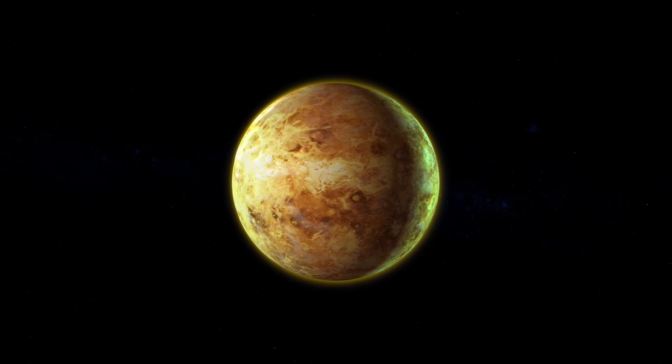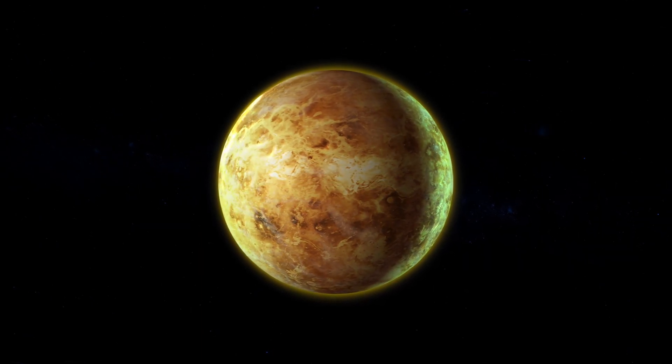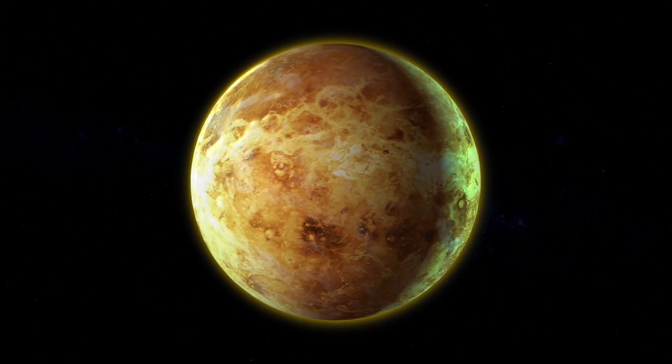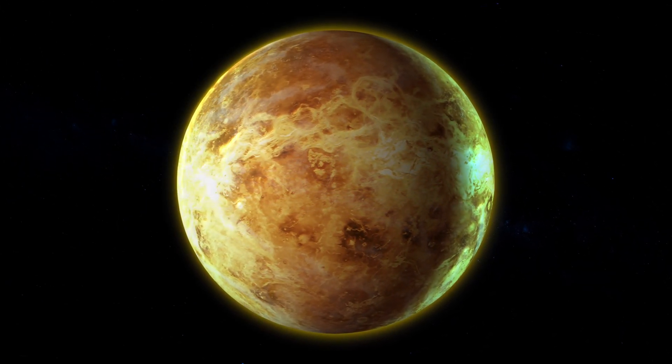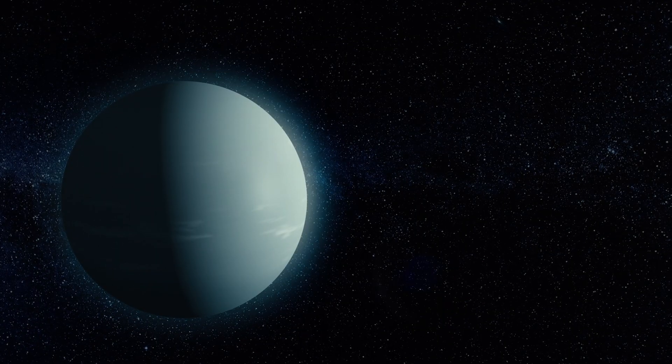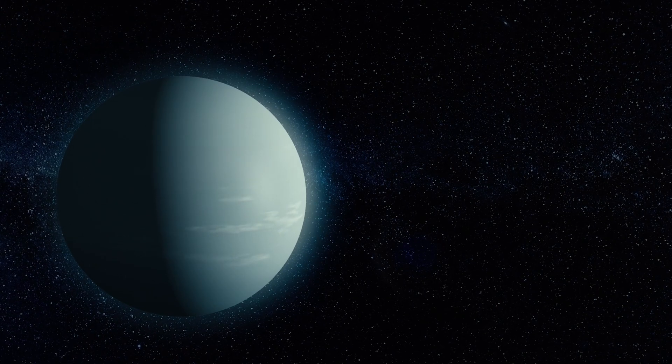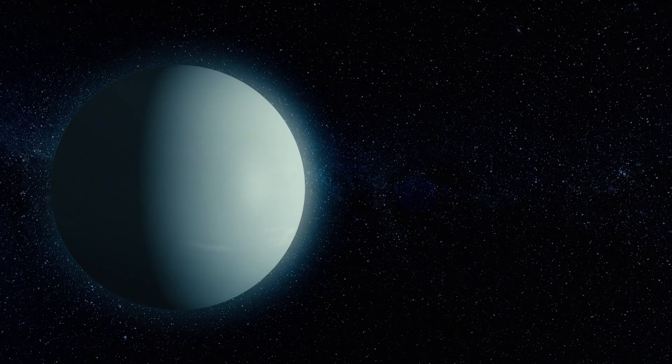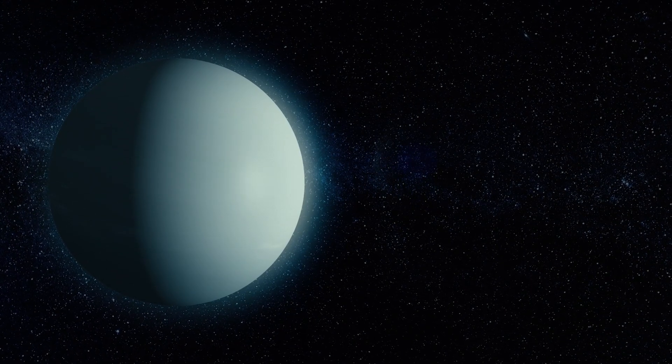Some may have been ejected during early solar system formation. Others could be remnants of star systems that no longer exist. And here is the kicker. There may be billions of these free-floating planets in the Milky Way alone. Possibly even more than the number of stars. Some of them are the size of Jupiter, or larger. While others may be rocky, Earth-sized, and surprisingly, warm.